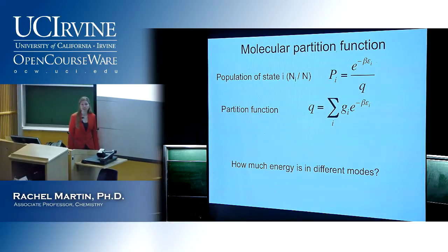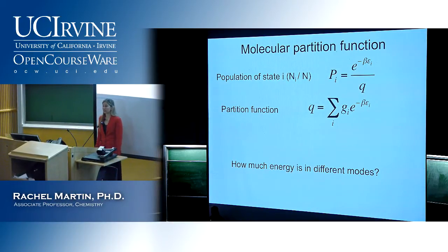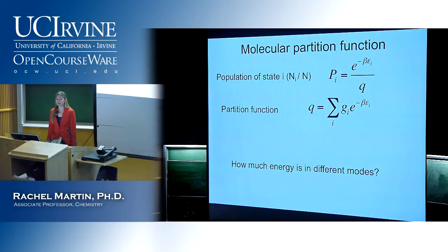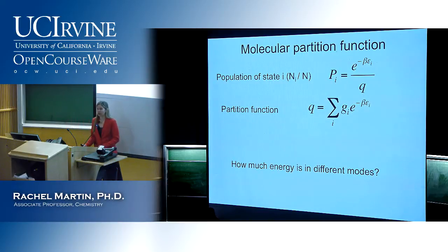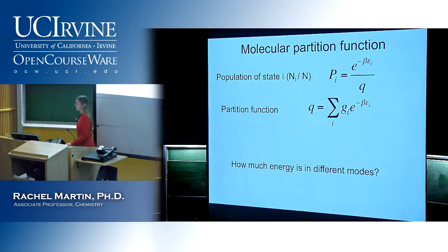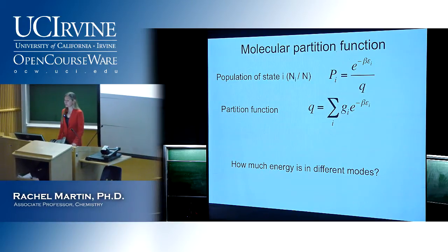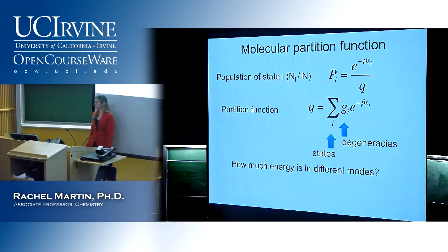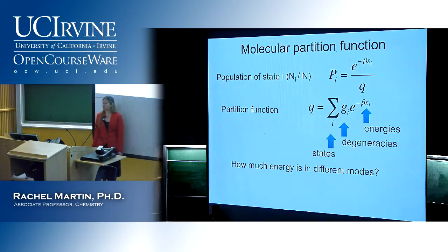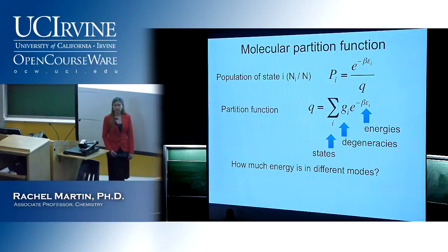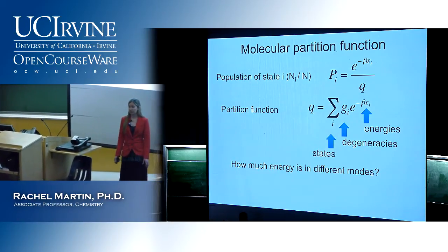In the previous example we were just talking about the rotational states. Here's the real definition of the partition function: we sum up over all the states the degeneracies times e to the minus beta times the energy of each state, summed over all states.